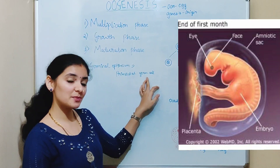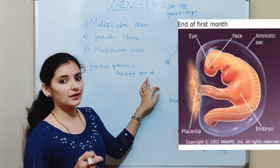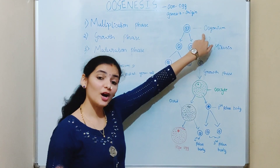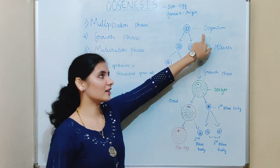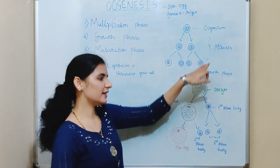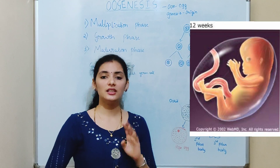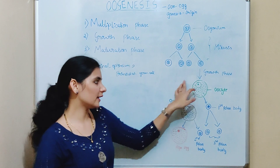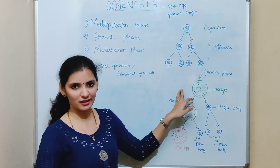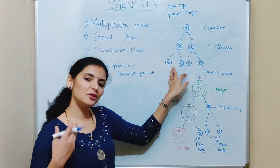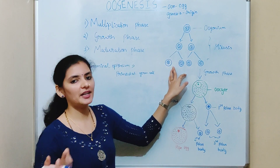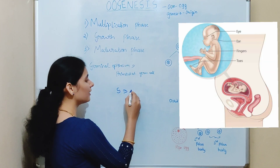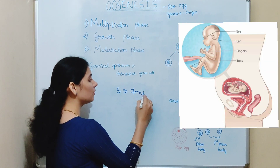The primordial germ cells present in the ovary of the fetus undergo mitotic division and start to produce oogonia. After the first month of embryonic life, production of oogonia begins and continues. By the end of the third month, some of these oogonia differentiate and produce primary follicles, whereas other oogonia continue undergoing mitotic division to produce more oogonia. By the end of the fifth month, the ovary will contain seven million oogonia.